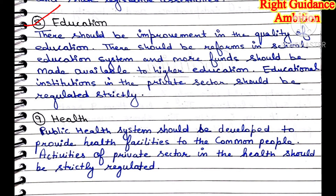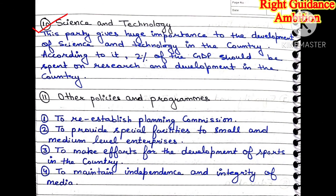Educational institutions in the private sector should be strictly regulated, because private sector institutions put unnecessary fees and burdens on children. Ninth point is health. The public health system should be developed so that common people can get health facilities. Private hospitals providing health facilities should have their records properly checked. Additionally, 2% of GDP should be spent in the research and development sector so that the country can grow and make new inventions.